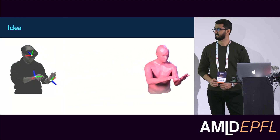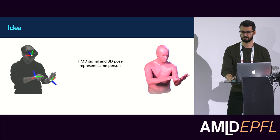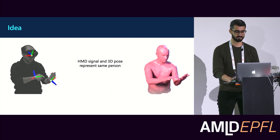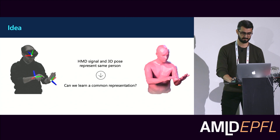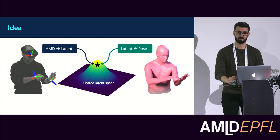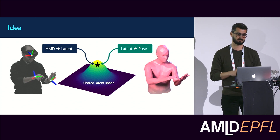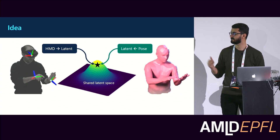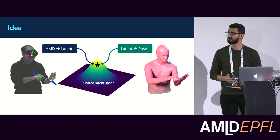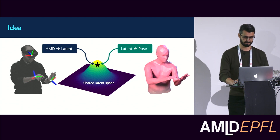One key factor here is that either of these representations actually represent the same person. So there should be a kind of common representation of these two types of data in a shared latent space. This is what we do — we learn that common representation with two different functions. One on the left maps the data from the head-mounted device to the latent space, and the other on the right maps the 3D pose to the latent space.